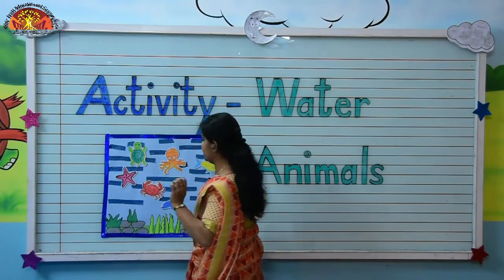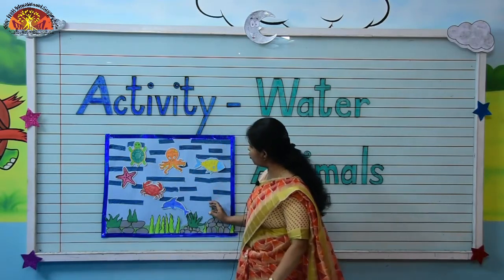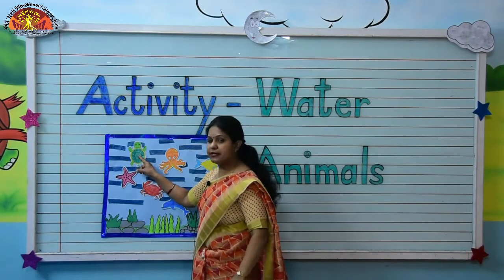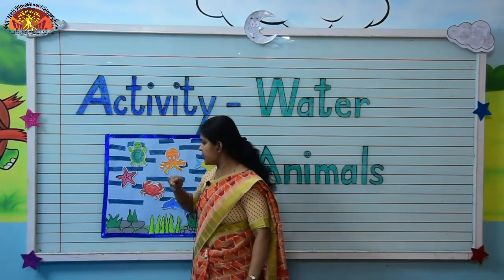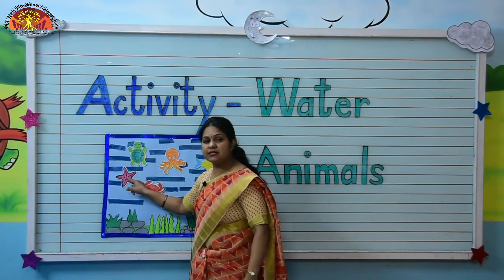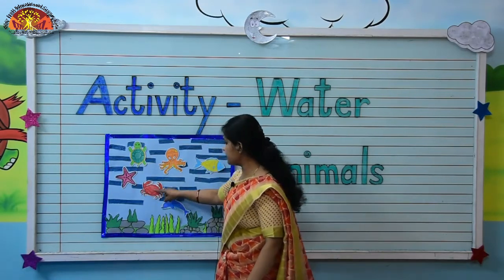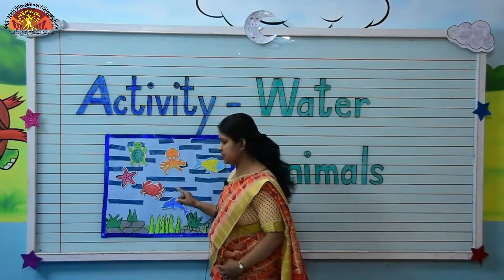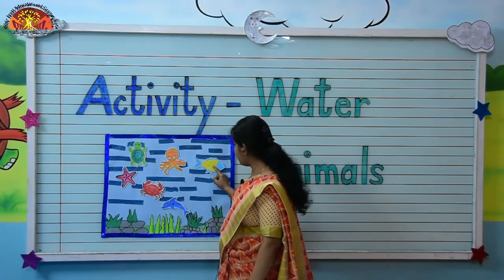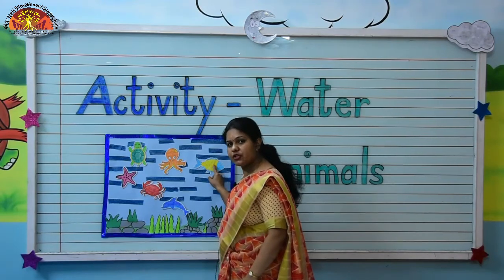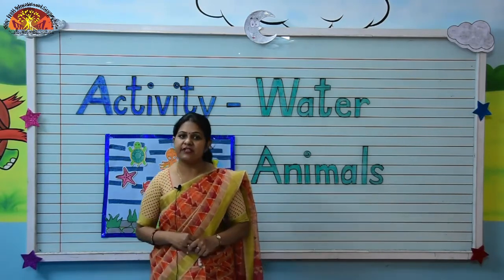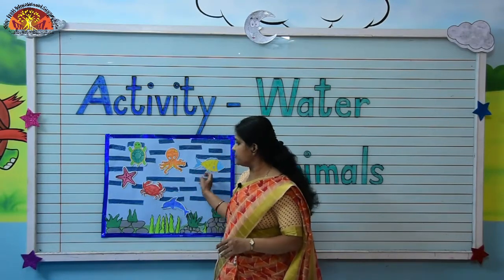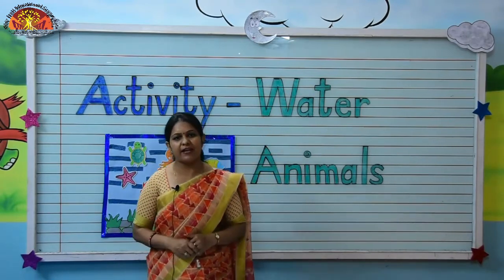Very good, kids! As you can see, we have so many water animals here. Let's identify them again: this is turtle, this is starfish, this is crab, this is an octopus, this is dolphin, and this is fish. So kids, do this activity at your home like this and identify the names of water animals. Bye-bye, have a good day!